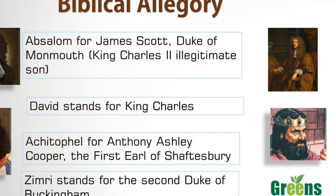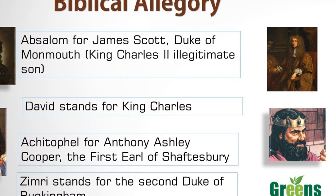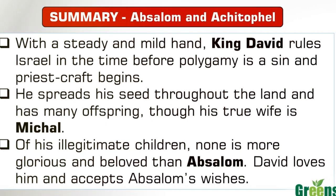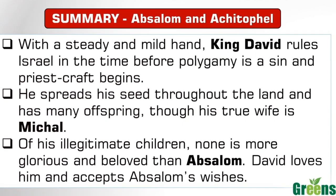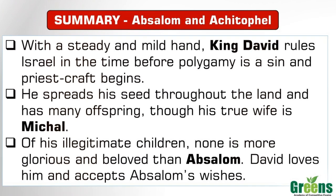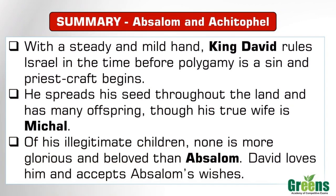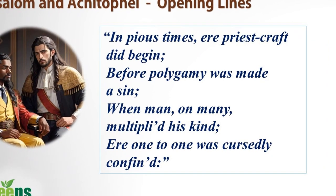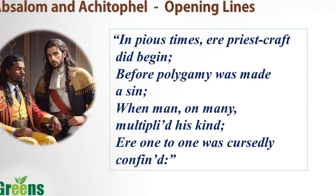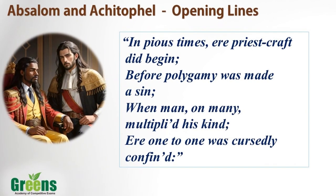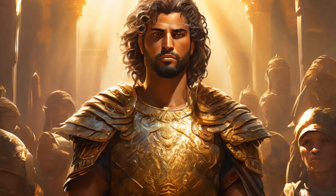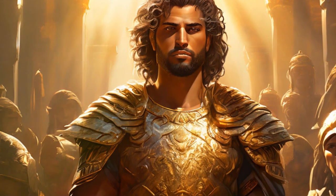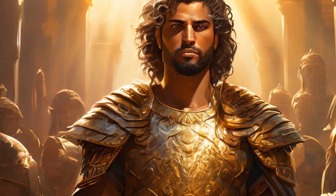In the poem's summary, King David, the ruler of Israel, has many illegitimate children. The poem describes that polygamy was not considered a sin at that time. Of all his illegitimate children, King David loves Absalom the most. Absalom was a strong and handsome man, popular even outside his country. But David's rule soon becomes troubled, as the Jews begin to complain about the king and threaten the government.